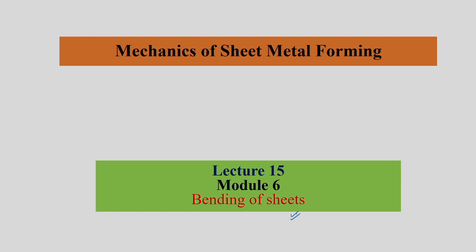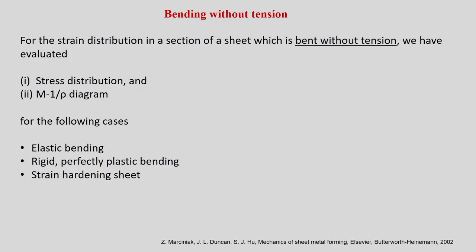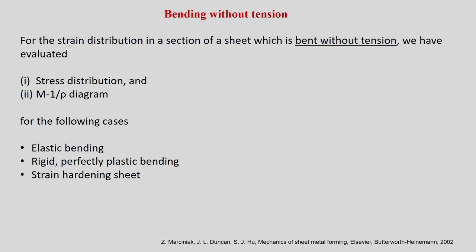We will continue our discussion in this lecture, still in bending of sheets. In the previous section, we evaluated strain distribution for bending of sheet with both moment and tension. We evaluated epsilon 1, which is epsilon a plus epsilon b, and epsilon b can be approximated to 1 by rho. We derived two important things: stress distribution and the moment versus curvature diagram.